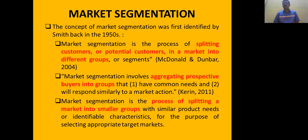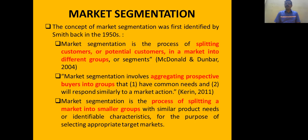For example, low-class customers together can be called one segment, children can be one segment, and women can be one segment. The division is done on the base of age, gender, income class, education level, occupation, religion, and many other bases for dividing into groups.